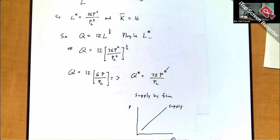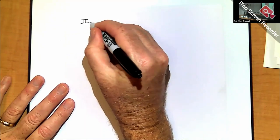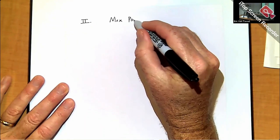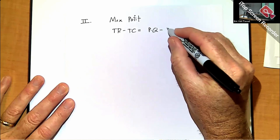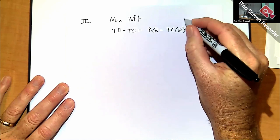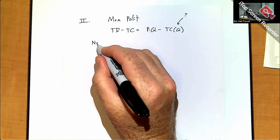Now let's do the same thing with the other approach: approach two. We generate a total cost function first and then put that into the profit function. This time we maximize with respect to Q, not labor. So I need a total cost function in terms of Q.